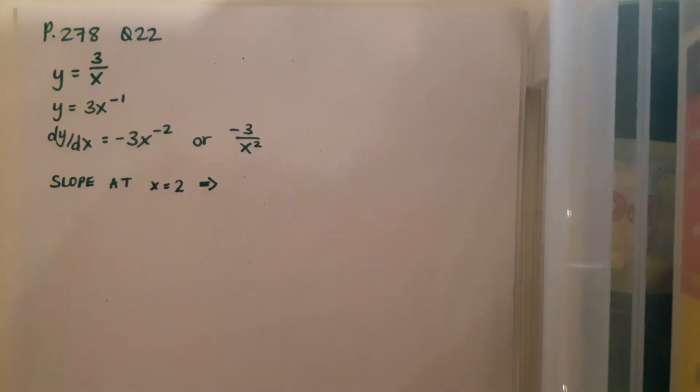So I'm given a point to work with, which is the point (2, 3/2). The x part of this point is obviously 2, and I'm going to use this to work out the slope of the tangent at that particular point. So I simply substitute in the x, and I get minus 3 over 4. So now I have the slope of the tangent.